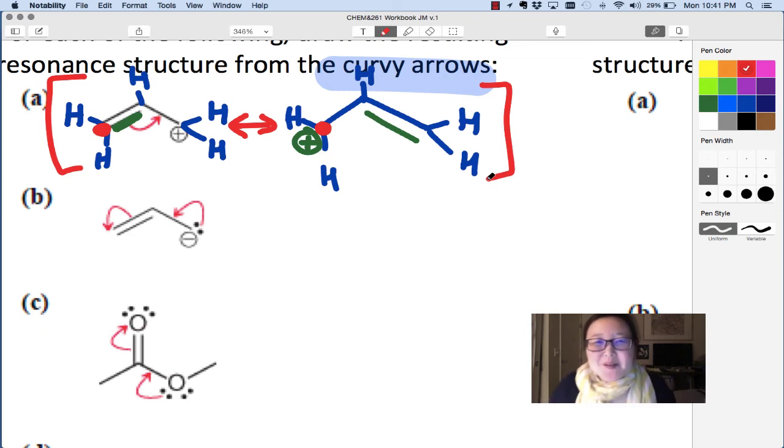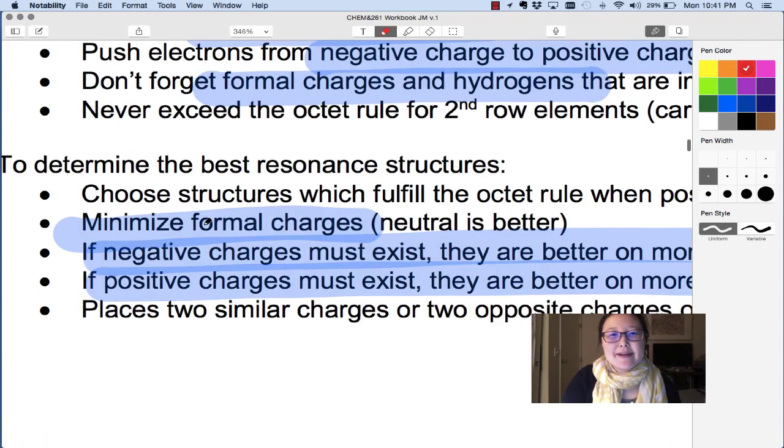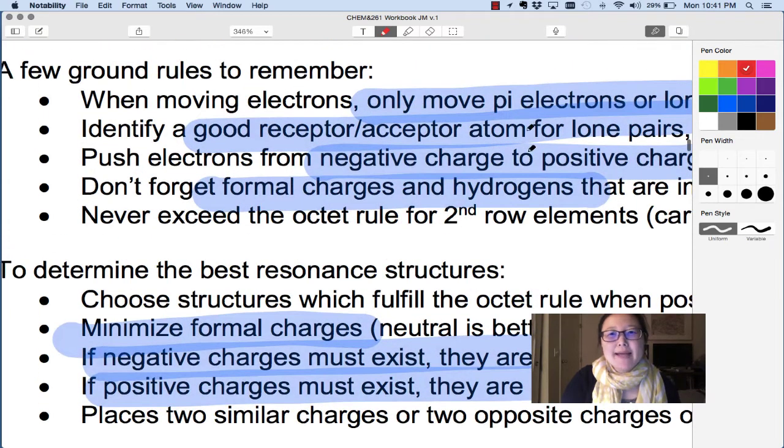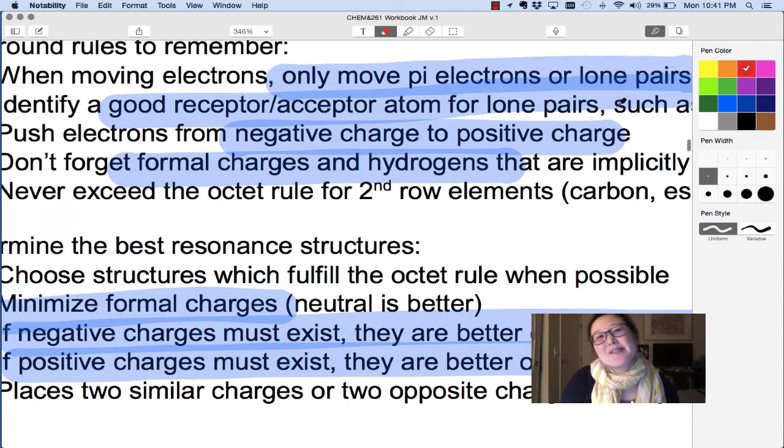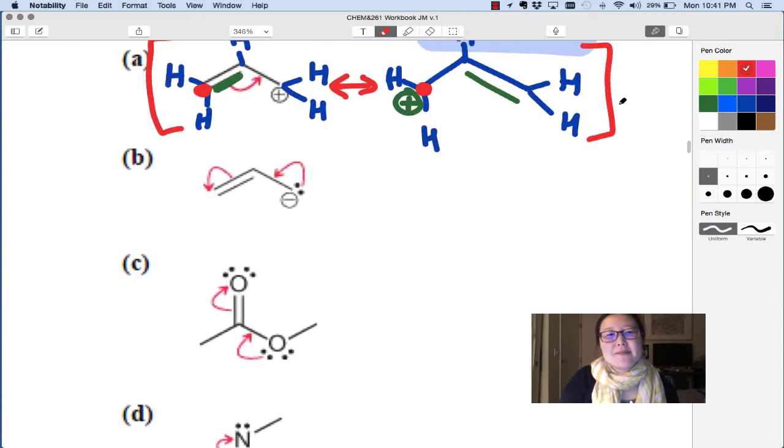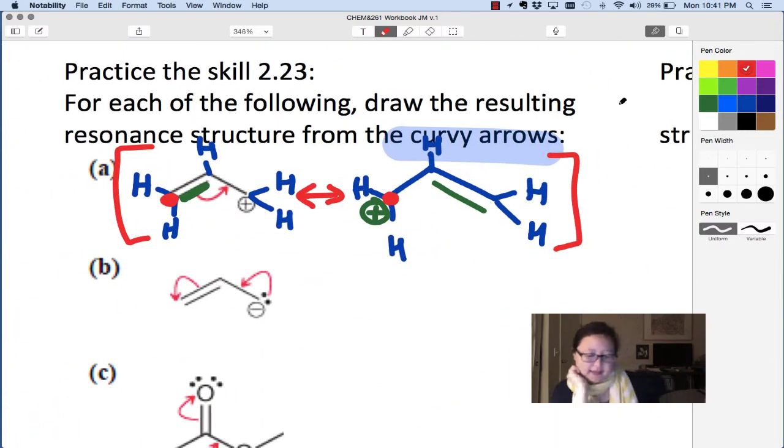Next problem. So in Part B, we're starting with a lone pair. Now remember our rule up here. Pi electrons are in a bond, like a double bond, a triple bond has pi electrons, or a lone pair. Lone pairs can be used as pi electrons as well.